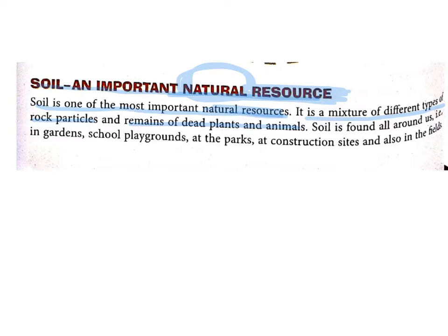What is soil? Soil is a mixture of different types of rock particles — you will find different sizes of particles in soil — and remains of dead plants and animals. When a plant dies, it gets mixed into the soil, and the same goes with animals. Soil is found all around us — in gardens, school playgrounds, at parks, at construction sites, and also in the fields.